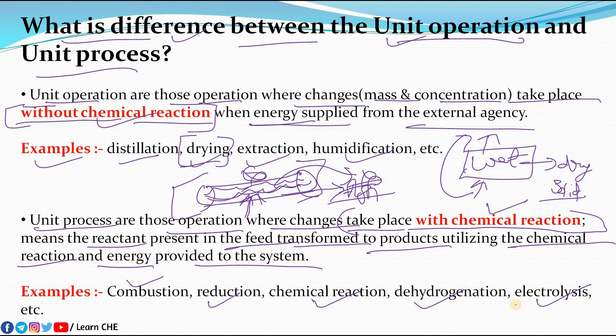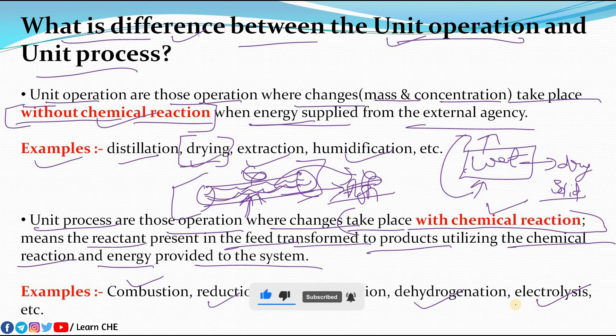To summarize the difference: unit operations are those operations where we see changes without chemical reaction, and unit processes are those operations where we see changes with chemical reaction. This is a simple but very important question asked in viva/interview as well. If you like this video, please subscribe to LearnCHE for more updates, and if you have any doubt, let me know in the comments. Thank you for watching.